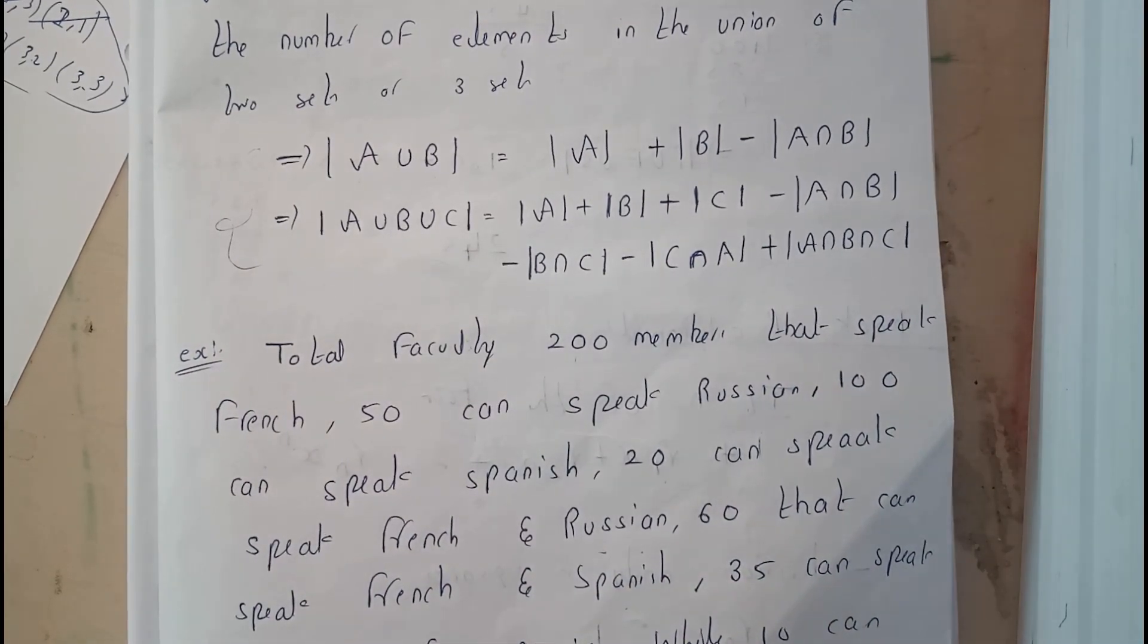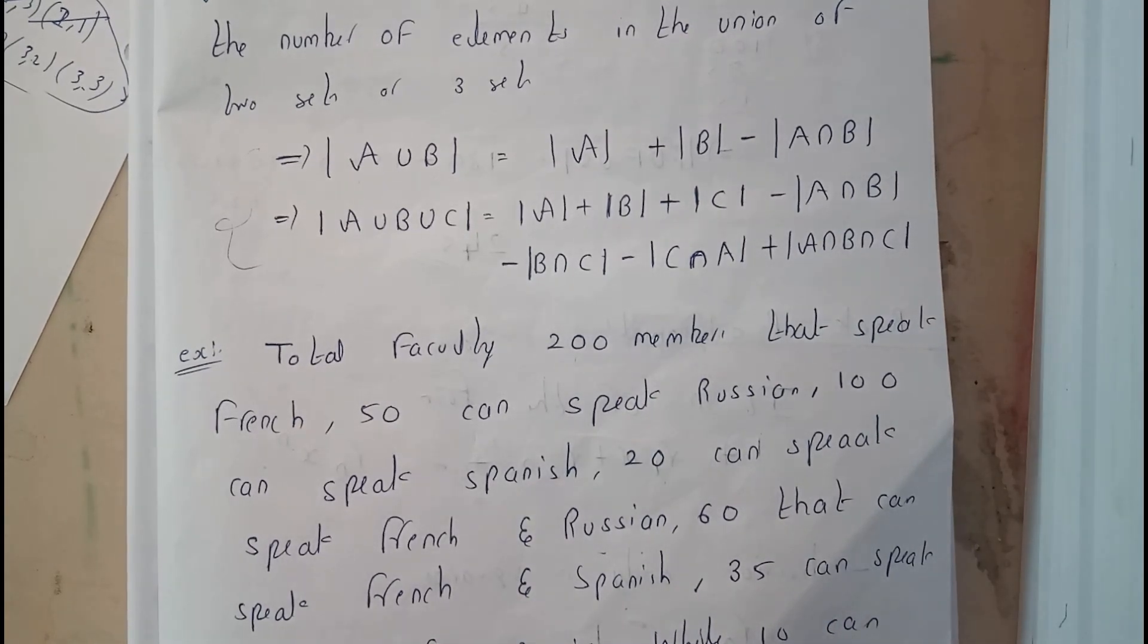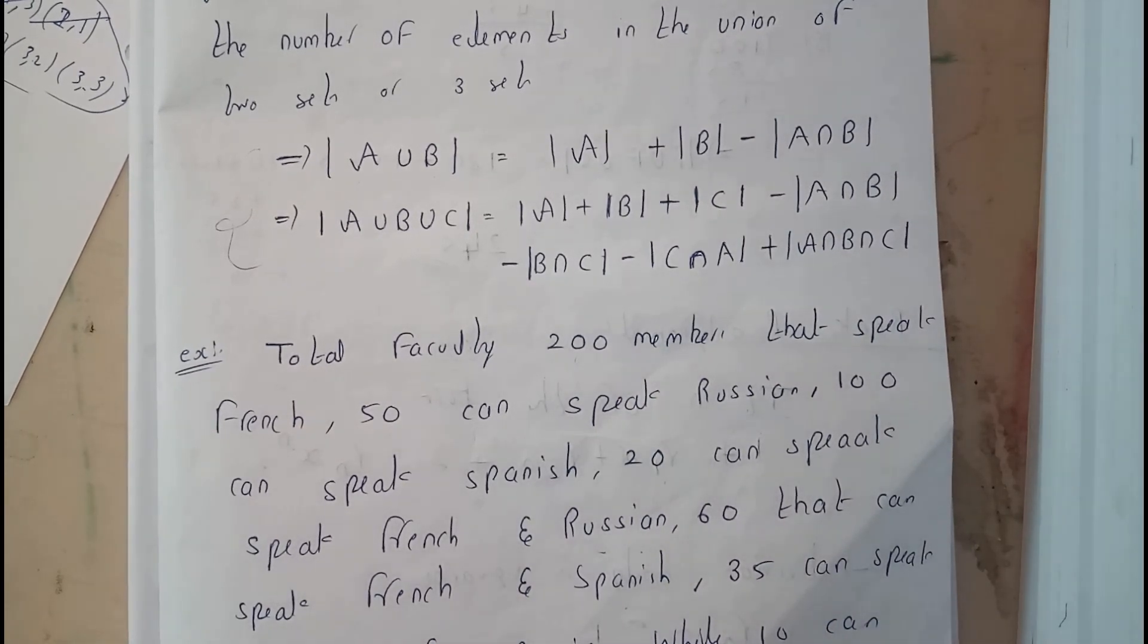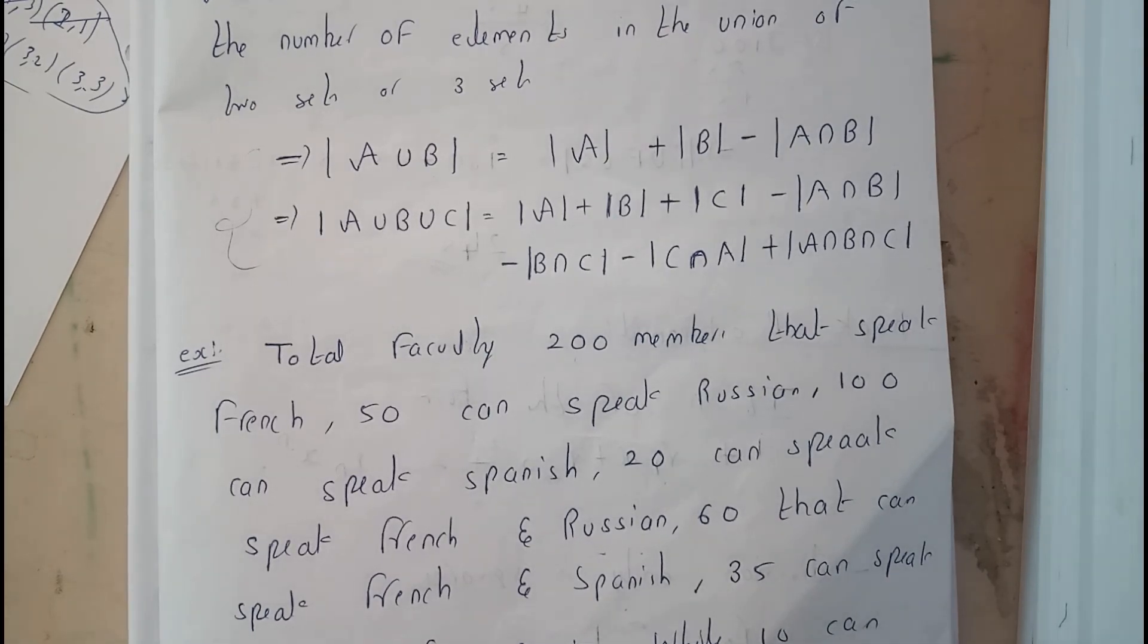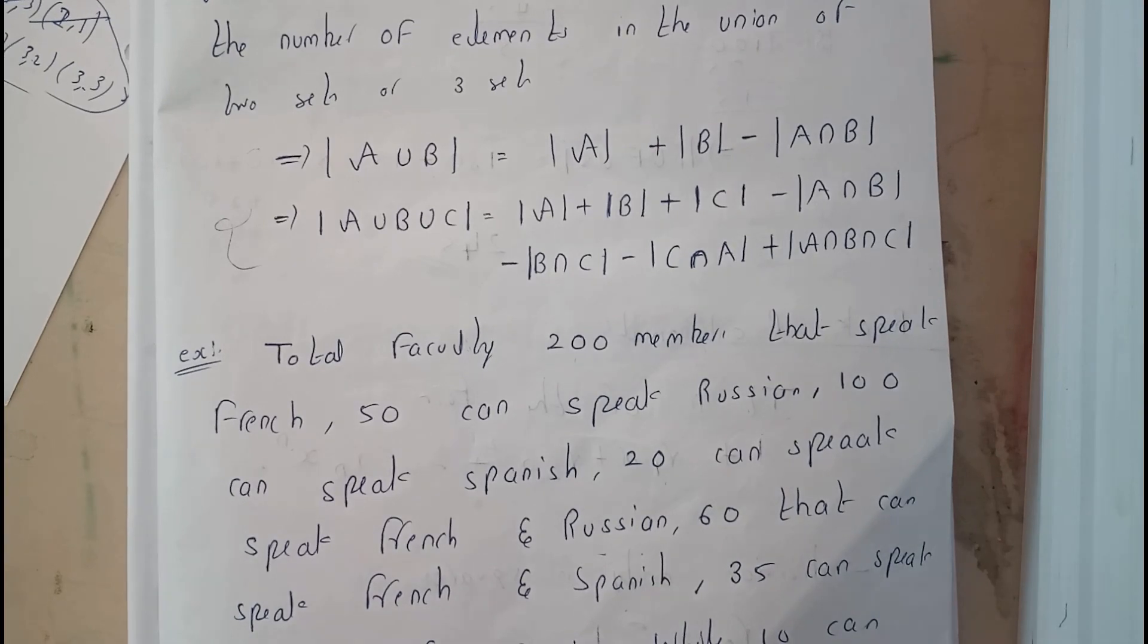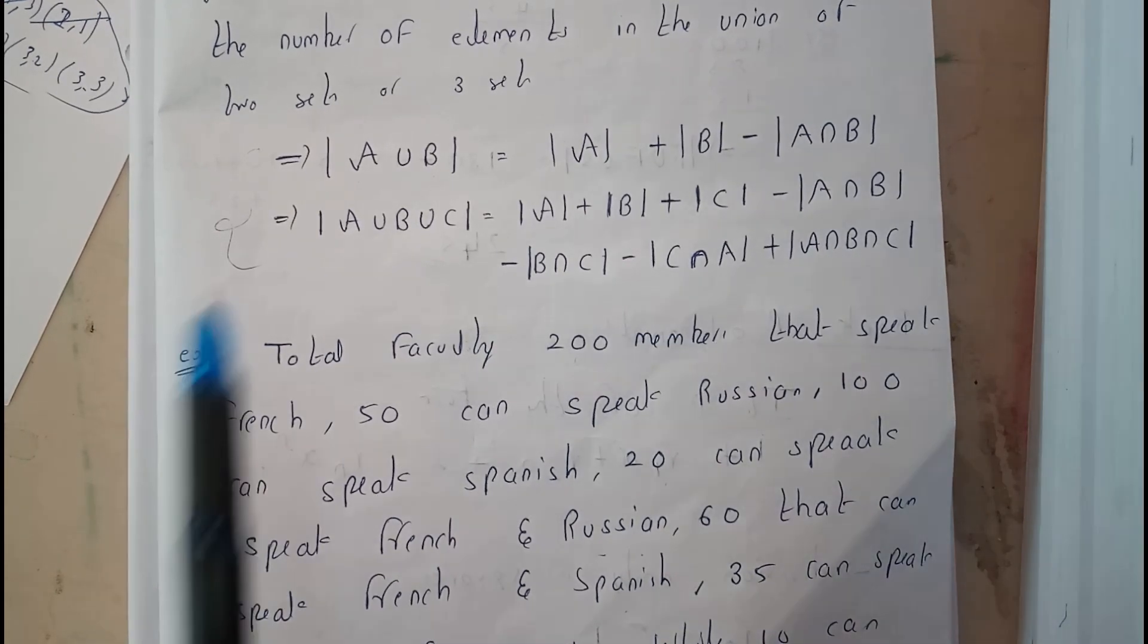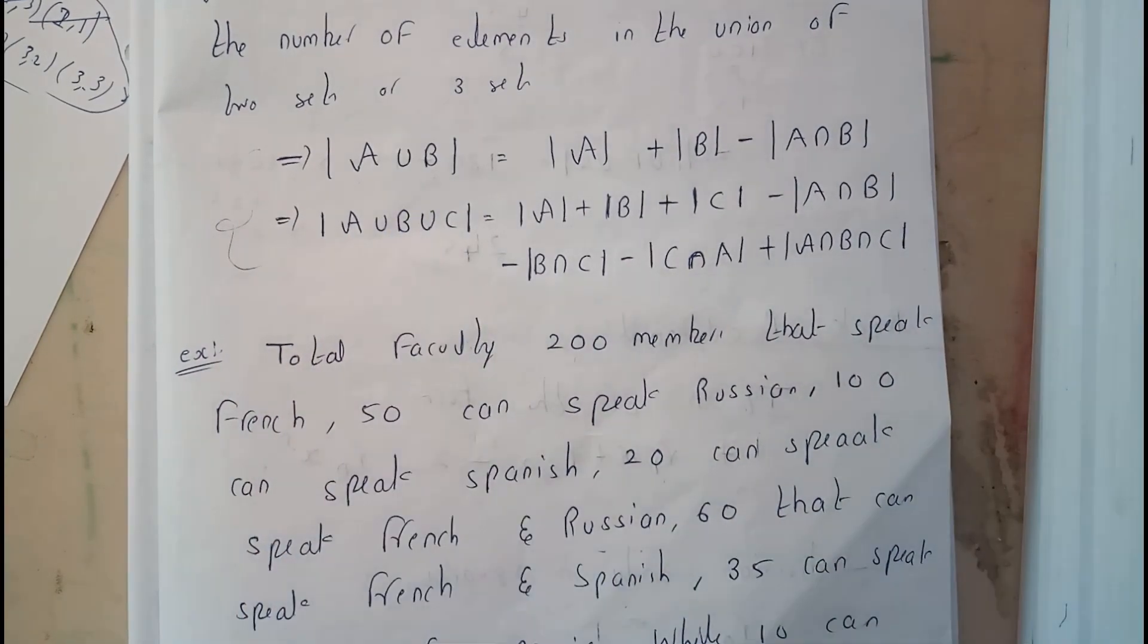50 members can speak Russian, 100 members can speak Spanish, 20 can speak French and Russian, 60 can speak French and Spanish, 35 can speak Russian and Spanish, while 10 can speak all three languages. How many can speak at least one language? The question is A union B union C.